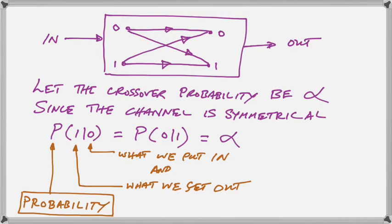Now we have a special way of writing probabilities in mathematics. So we say let the binary crossover probability be alpha. And since the channel is symmetrical we just write what we had in words in short form.